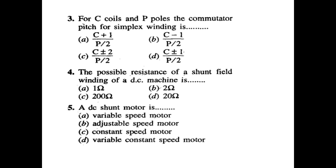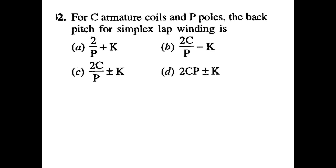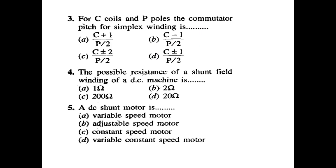Third question: For C coils and P poles, the commutator pitch for simplex winding. The formula options are: (C+1)/(P/2); (C-1)/(P/2); (C±2)/(P/2); (C±1)/(P/2). The answer is option A: (C+1)/(P/2), for simplex winding.